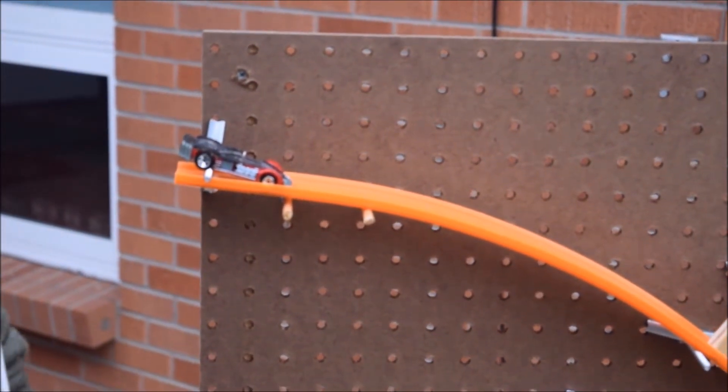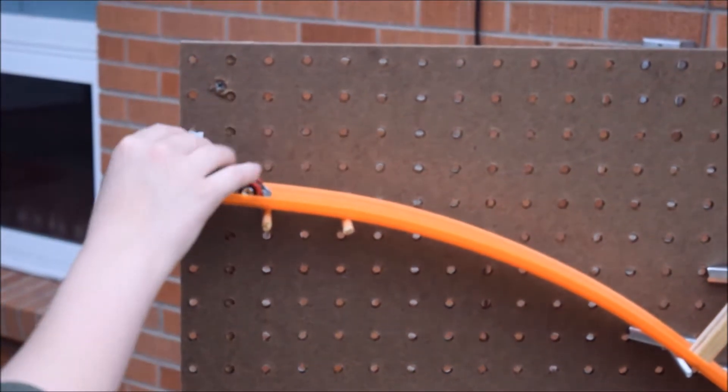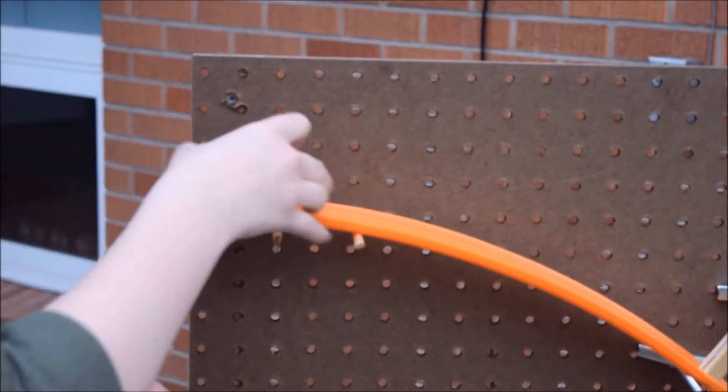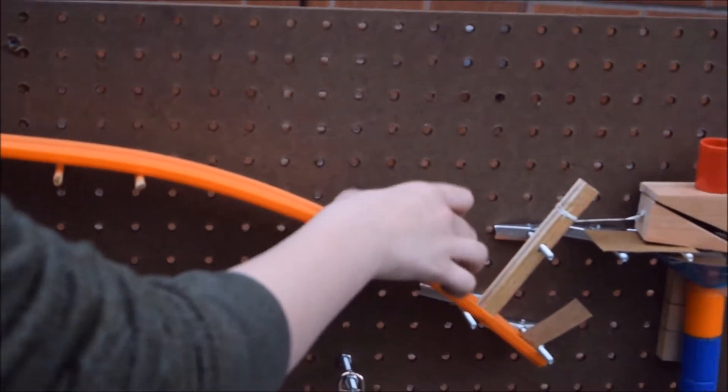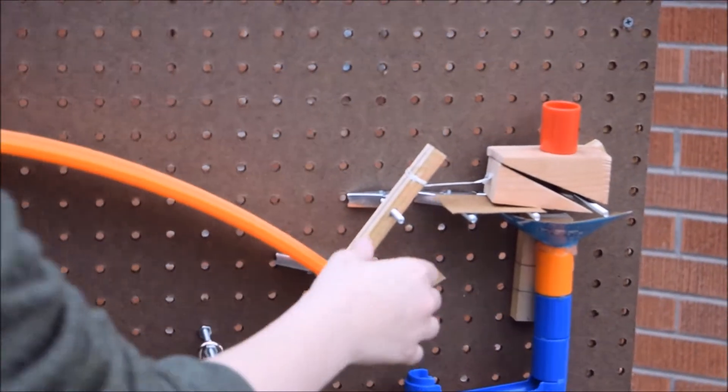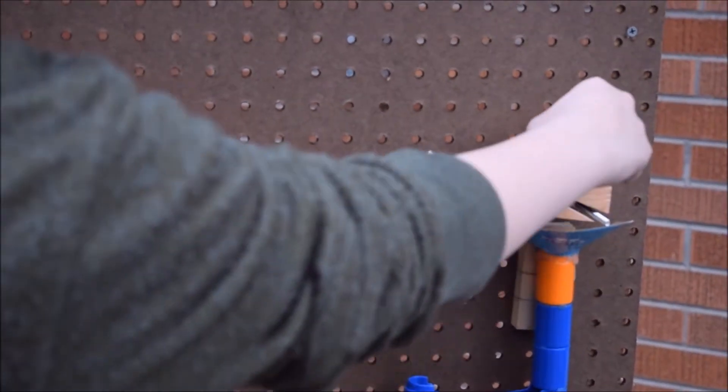Right here we got a wheel and axle car that will then roll down this inclined plane, hit that lever. When this lever moves it will pull back this wedge.